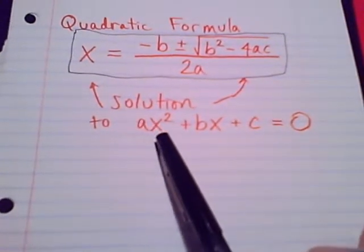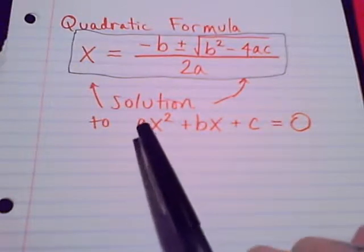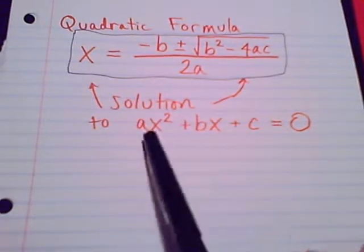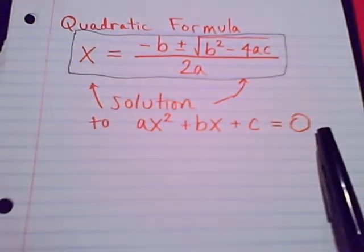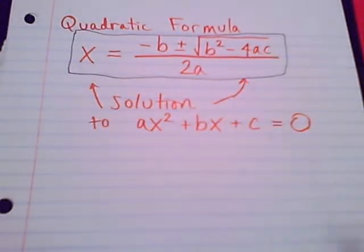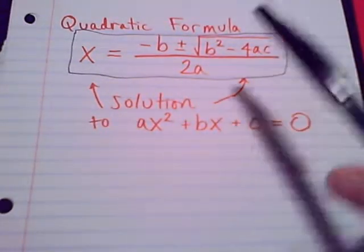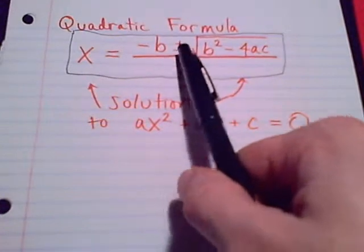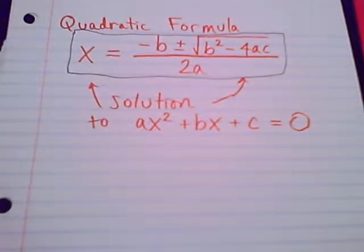If we have our quadratic equation in standard form, so the terms in descending order all on one side equal to zero, we can plug in numbers into this formula and that will give us our solutions. There's that familiar plus-minus symbol and that's going to lead us to having two solutions.